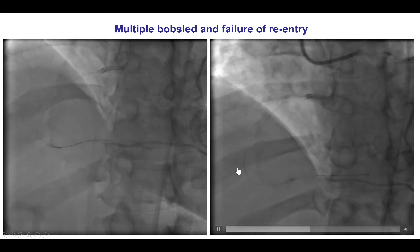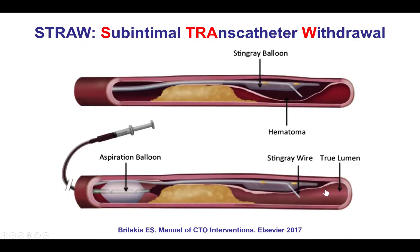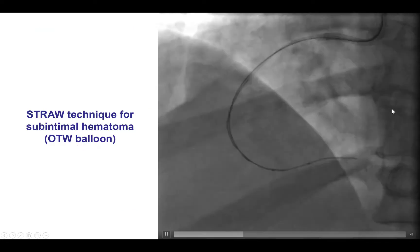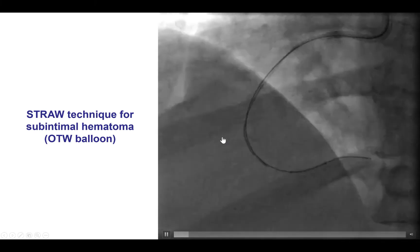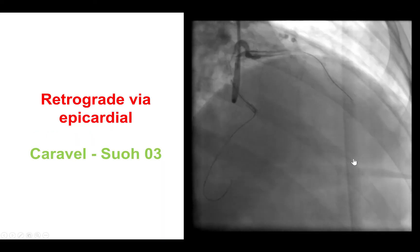This part of the vessel, which previously appeared fairly large caliber, was now almost completely obliterated, likely because of subintimal hematoma formation. In cases like this, the STRAW technique — subintimal transcatheter withdrawal — can be used to aspirate the hematoma and decompress the compressed distal true lumen. This can be done by aspirating from the Stingray balloon directly, or by advancing an over-the-wire balloon or guide catheter extension and aspirating from that. We advanced an over-the-wire balloon and aspirated through both the over-the-wire balloon and the Stingray balloon, but were still unable to re-enter.